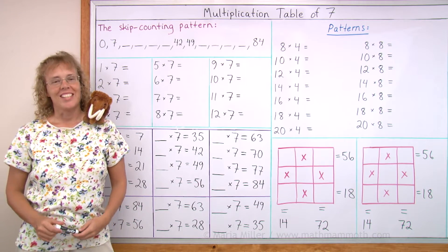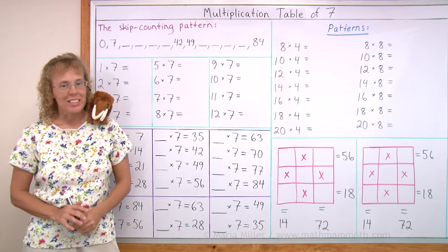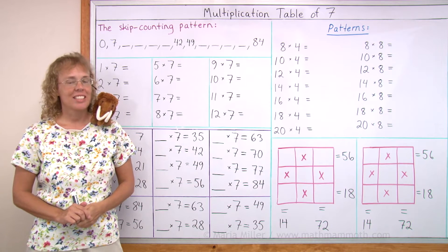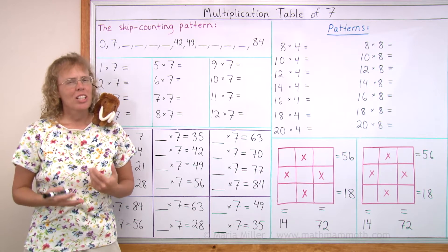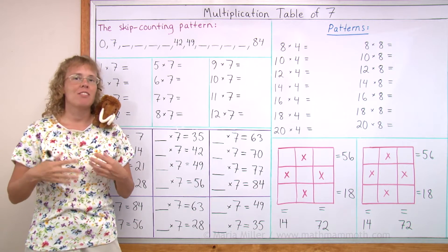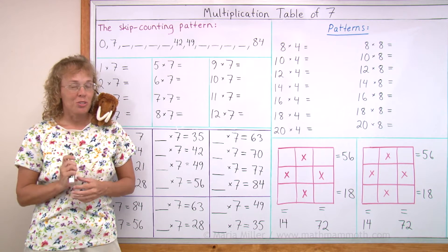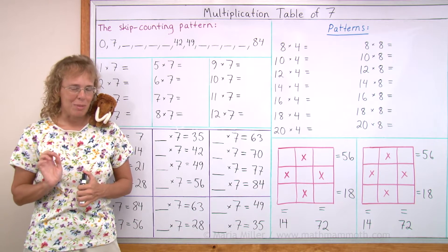Hello, my name is Maria and this is Mathi, my mascot. In this lesson we are studying the multiplication table of 7. And in this table you actually know most of the answers because you've already studied the table of 5 and 4 and 6 and so on. Very few new facts to study, but first we will study the skip counting pattern.